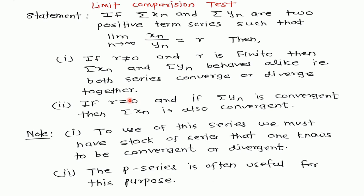Second, if r is equal to zero and series yn is convergent, then series xn is also convergent. This is the statement of the limit comparison test. Note: we are using this test for checking only positive term series. In some books it is written that it is useful to check absolute convergence of the series — this is true because in absolute convergence we take the absolute value of each term, making the series a positive term series.